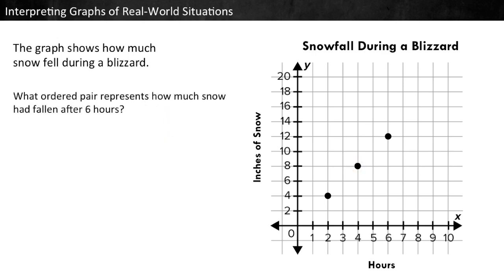What ordered pair represents how much snow had fallen after 6 hours? The x-axis is hours, so our x-coordinate is 6. To find the y-coordinate, first locate 6 on the x-axis and move up until you find the point. Then move left until you hit the y-axis. The y-coordinate of this point is 12. The ordered pair (6, 12) means that 12 inches of snow had fallen after 6 hours.